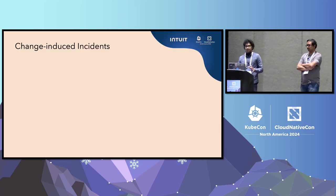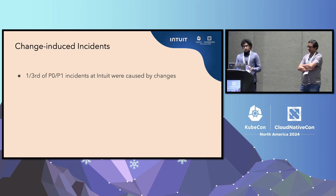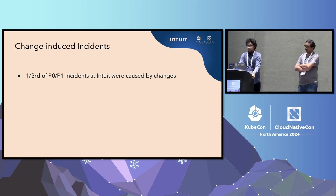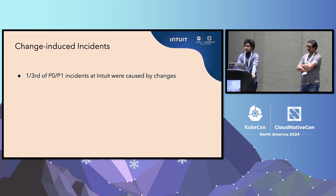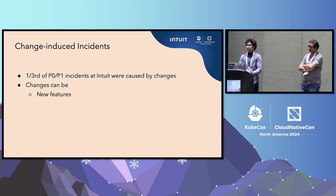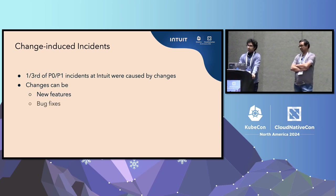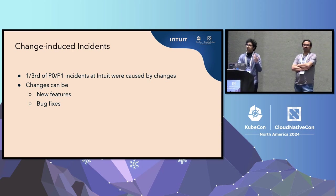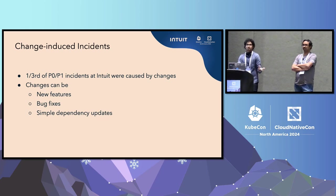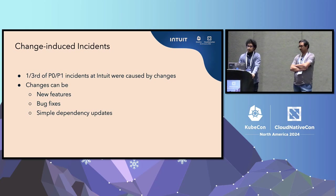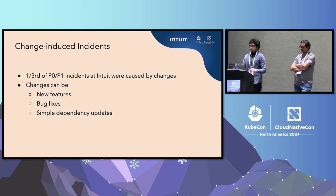Let's first define what change-induced incidents are. We saw that more than one-third of the P0 and P1 — the most critical incidents — at Intuit were caused by changes. These changes could be anything: new features, bug fixes that turned out to be bugs themselves, or even simple dependency upgrades — maybe a new version of NumPy or pandas — which could cause catastrophic failures inside the production system.